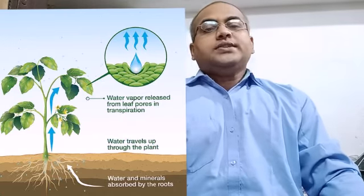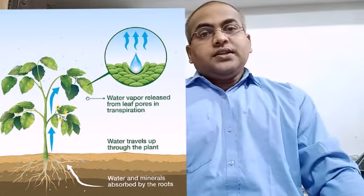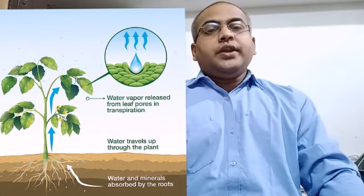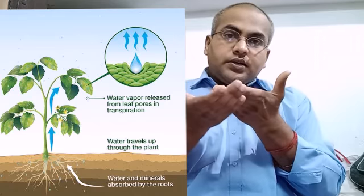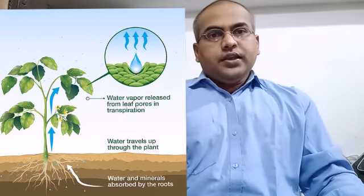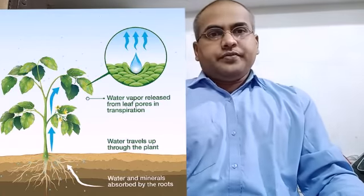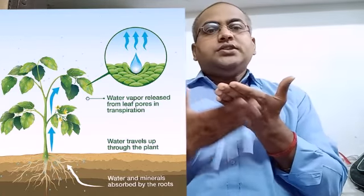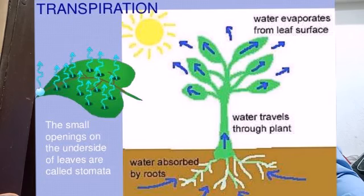This excess water is released by the stomata, which are present on the lower side of the leaf. These stomata are very small, tiny kidney-shaped holes. From there, the excess water converts into water vapor and is released into the atmosphere.